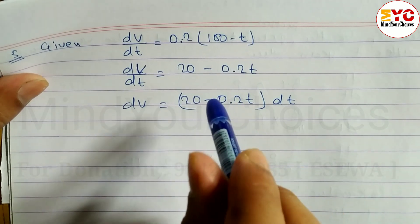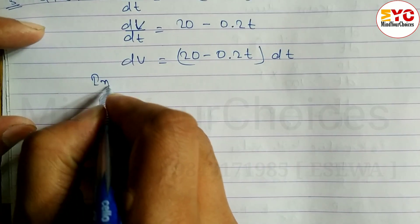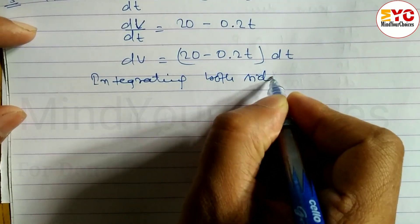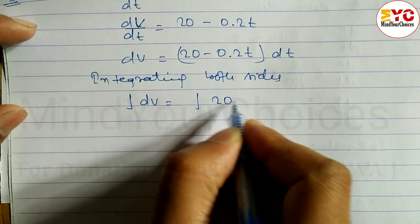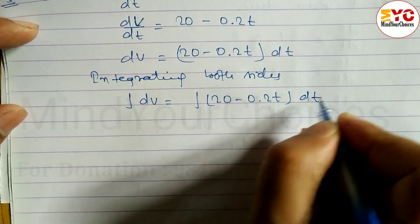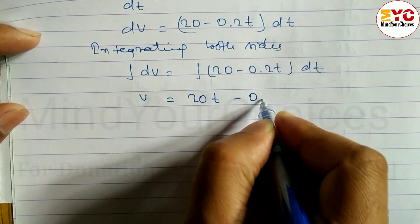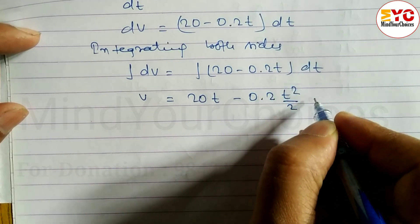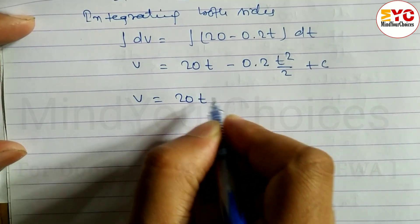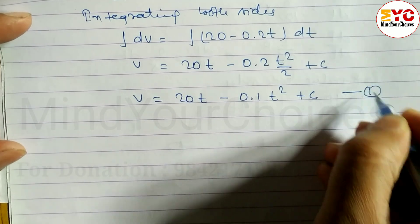Integrating both sides: ∫dv = ∫(20 − 0.2t)dt. The integral of dv is v; integrating the right side gives 20t − 0.2·(t²/2) + c = 20t − 0.1t² + c. This is equation 1.